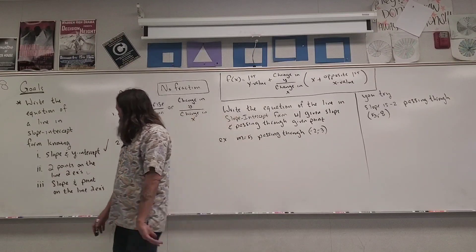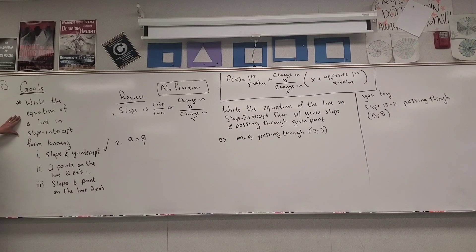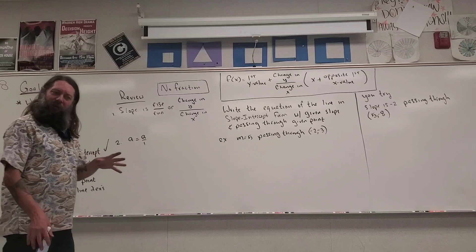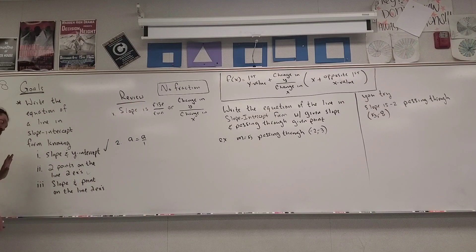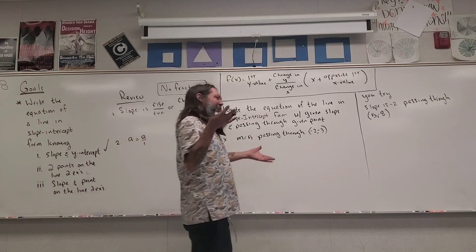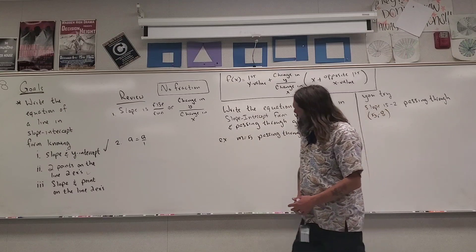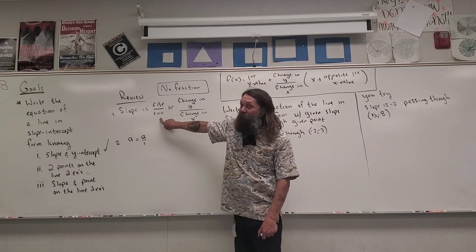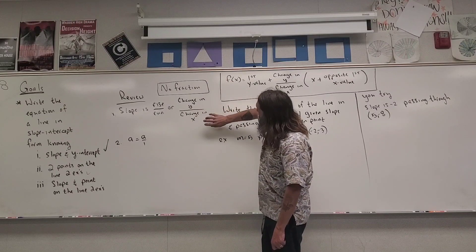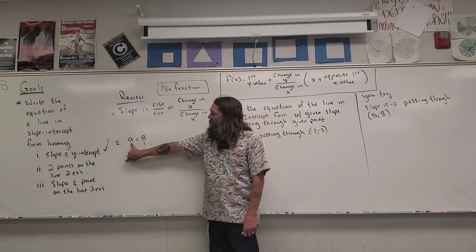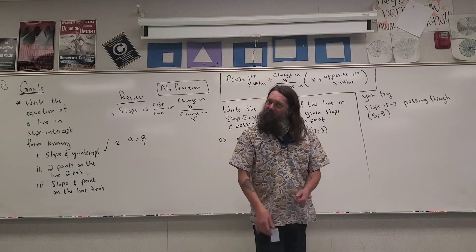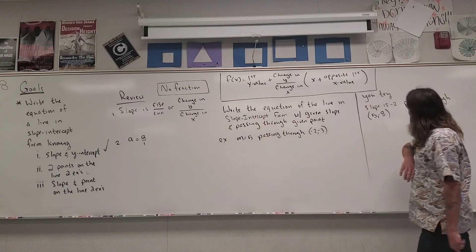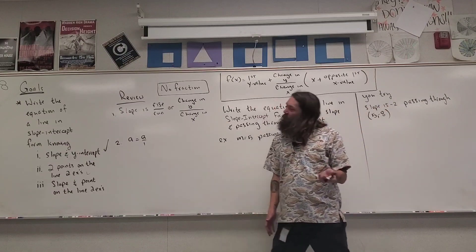Now the third type of problem: writing the equation knowing the slope and one point on the line. I want to relate this to the previous type. Remember, slope is rise over run, which is change in y over change in x. And any whole number can be written as that number over 1. We'll still make a table, plug into the formula, and simplify — same steps.